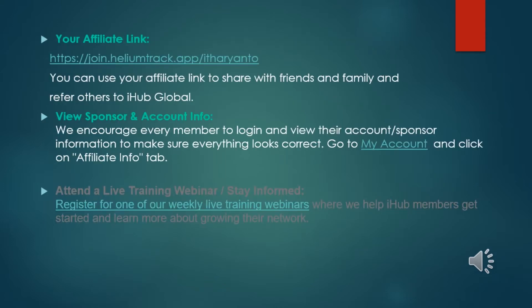Your affiliate link is available in your account. You can use it to share with friends and family and refer others to iHub Global. View your sponsor and account info — we encourage every member to log in and verify their account and sponsor information to make sure everything looks correct. Go to My Account and click on the Affiliate Info tab. Attend a live training webinar to stay informed — register for one of our weekly live training webinars where we help iHub members get started and learn more about growing their network.